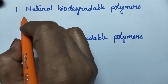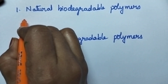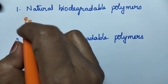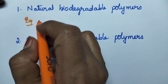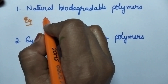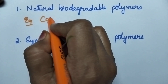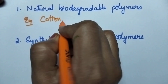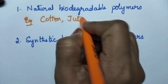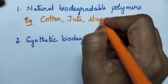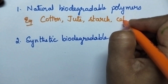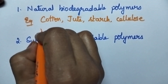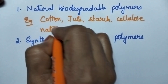The natural biodegradable polymers undergo degradation very naturally in the presence of bacteria or microorganisms. Good examples of natural biodegradable polymers include cotton, jute, starch, cellulose, natural rubber, etc.